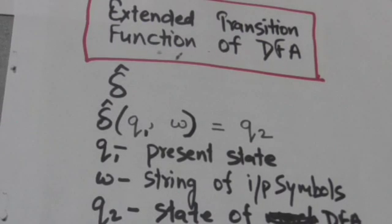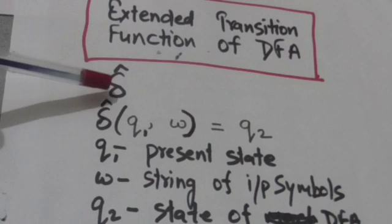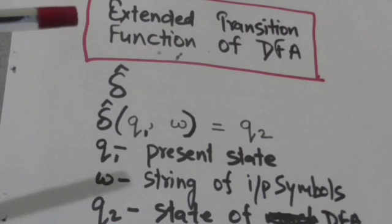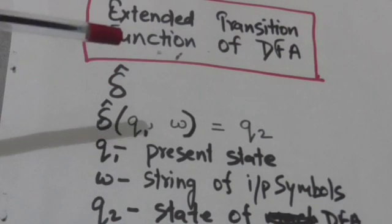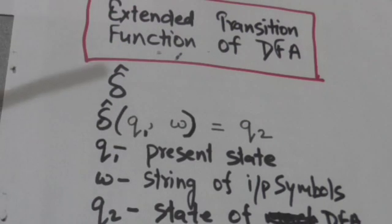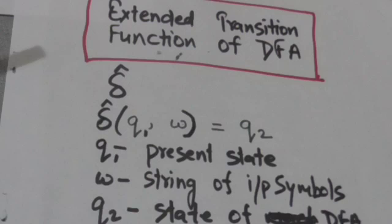Hello friends, welcome back. In this tutorial we will study about the extended transition function of DFA. Extended transition function of DFA is represented by delta cap. In a previous tutorial we studied about the normal transition function. The output of normal transition function describes where the machine would be after reading a single input symbol from the current state.